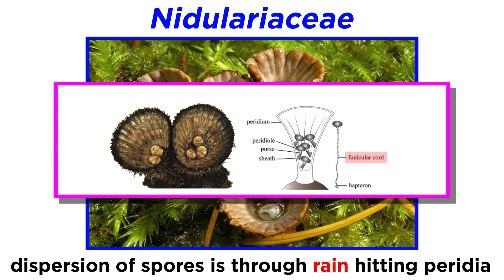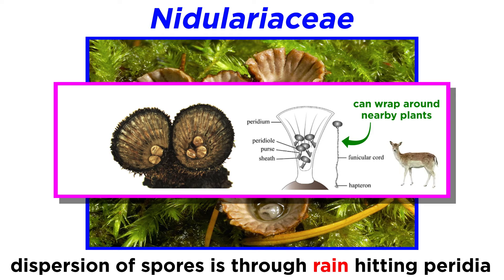Two out of the five genera in the family possess tendrils called funiculi that are attached to the peridioles. When the peridioles are expelled from the peridium, the funiculi can wrap around a nearby plant. It is hypothesized that herbivores will eat the plant and the attached peridiole, assisting in further spore dispersal.